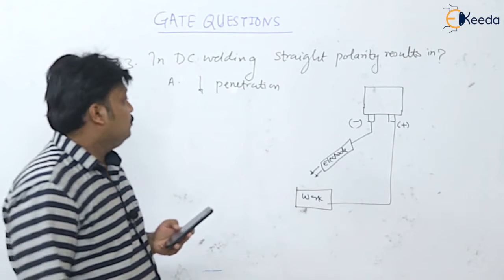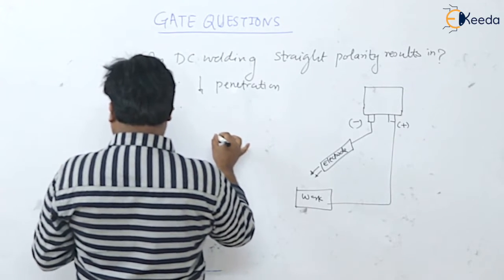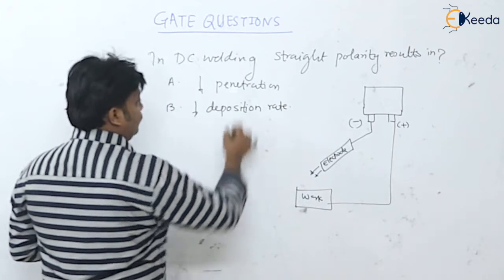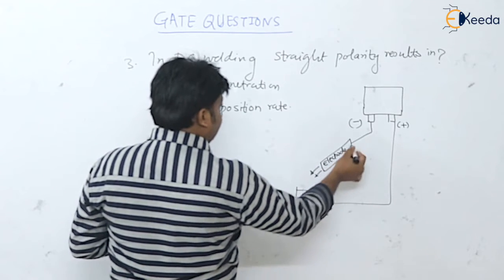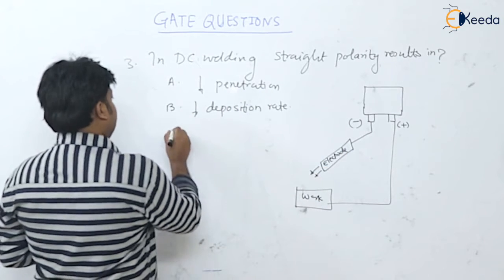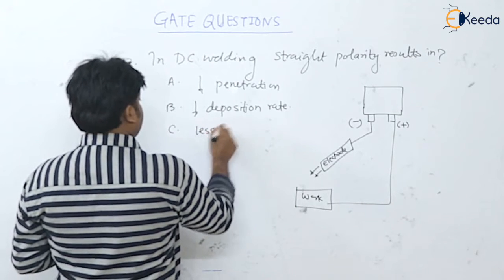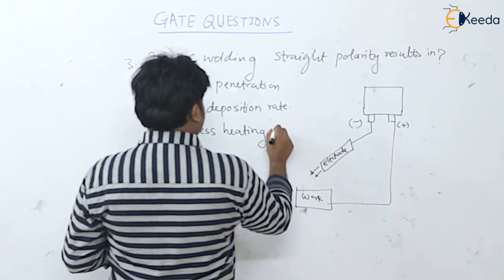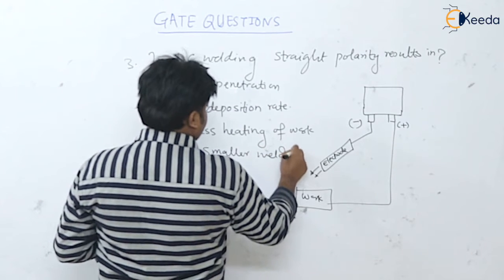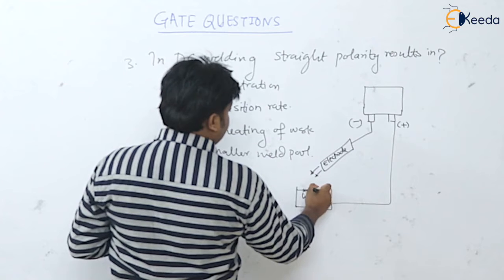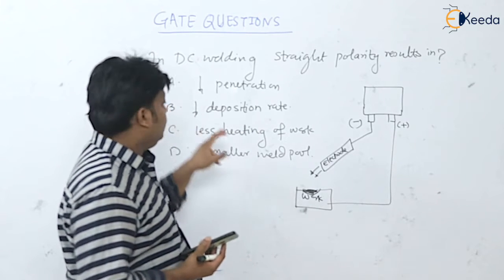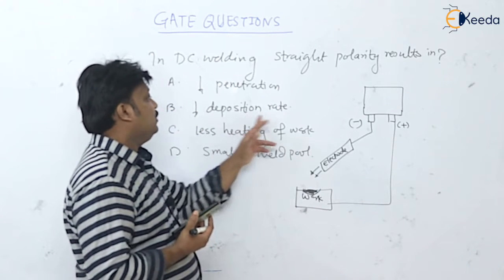In direct current straight polarity, maximum heat goes onto the work, so the electrode having the negative terminal means the deposition rate from the electrode is minimum. Option C — less heating at the work — is wrong because we get maximum heat at the work. Option D — smaller weld pool — is also wrong because maximum heat on the workpiece means a bigger weld pool.